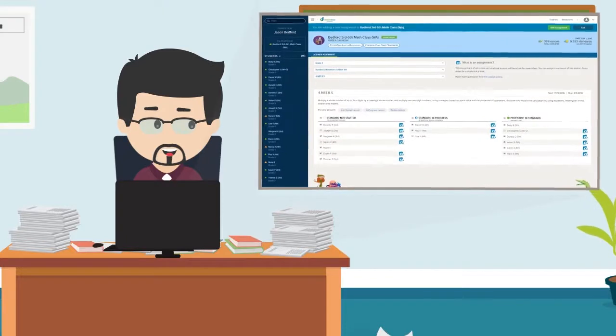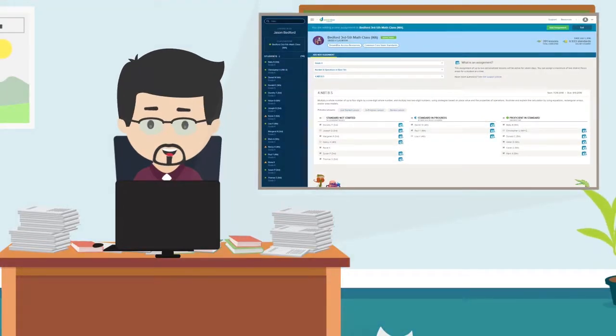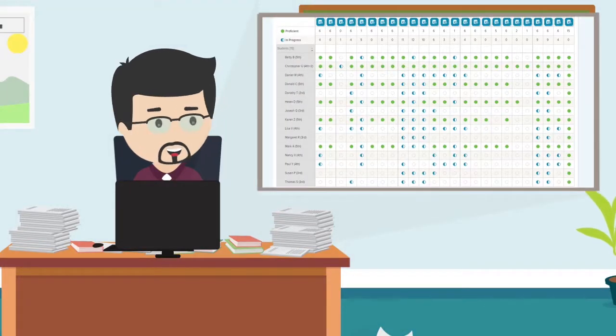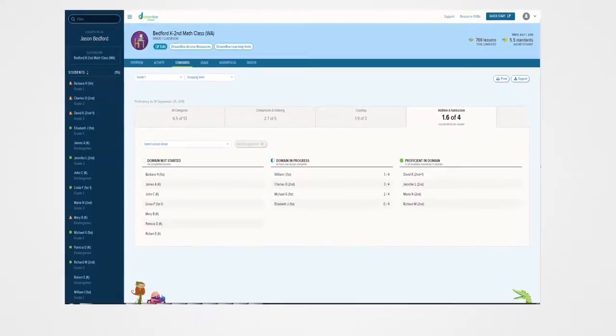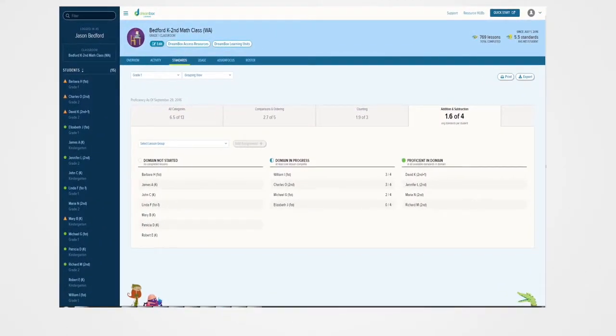I start with my Dreambox Insights dashboard, which quickly gives me the information I need. The standards report shows me an overview of how my students are progressing against each standard, and even shows me groups based on progress and proficiency.